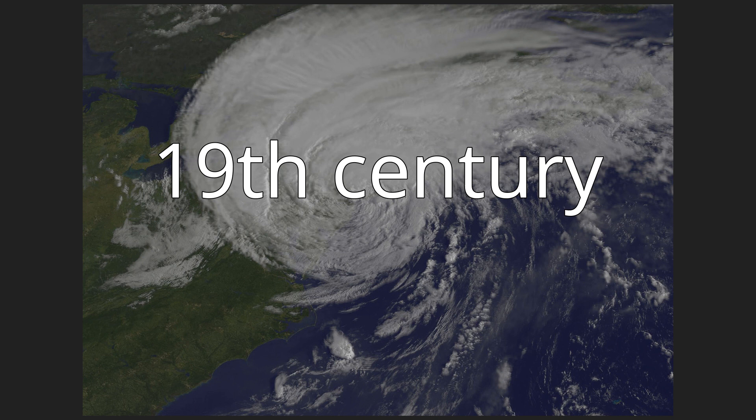September 23–24, 1815: The 1815 New England hurricane struck New England as a major hurricane and delivered an 11-foot (3.4 m) storm surge that funneled up Narragansett Bay. The hurricane destroyed some 500 houses and 35 ships and flooded Providence, Rhode Island. It also caused at least 38 deaths throughout New England.